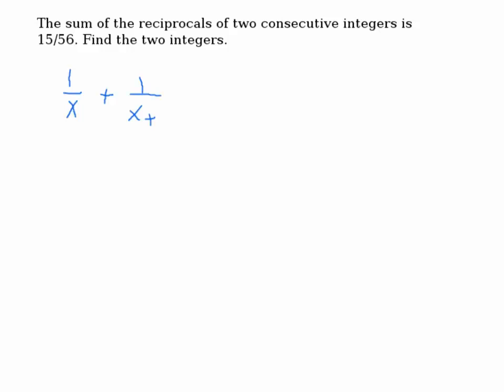1 over x plus 1. They're saying this would be equal to 15 over 56. So the equation is: 1 over x plus 1 over (x plus 1) must be equal to 15 over 56. This is how you set up the problem.